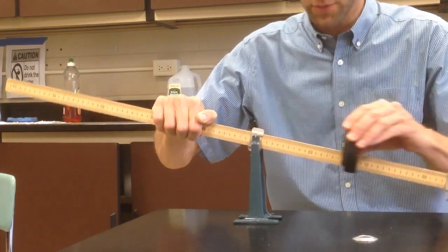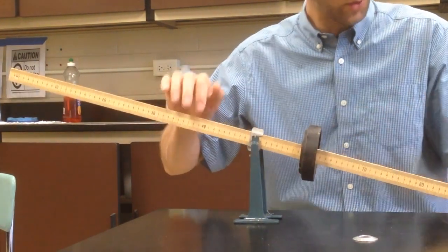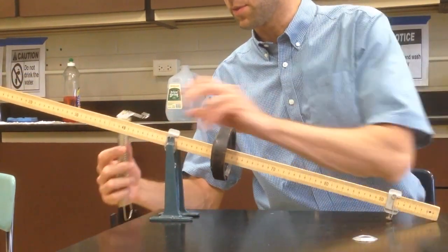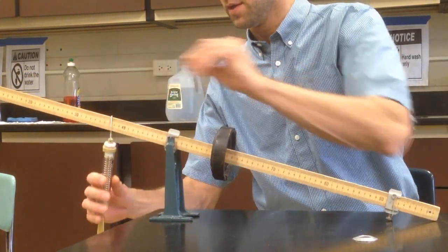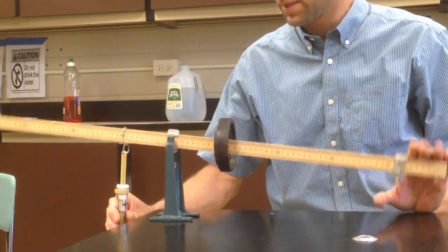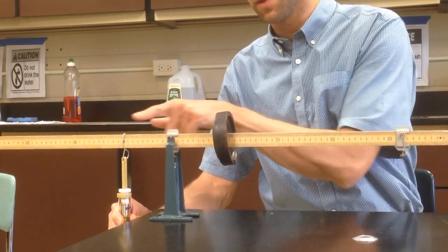Likewise, your spring scale can also be at different distances. Right here it's at 40 centimeters, which is only 10 centimeters from the fulcrum.